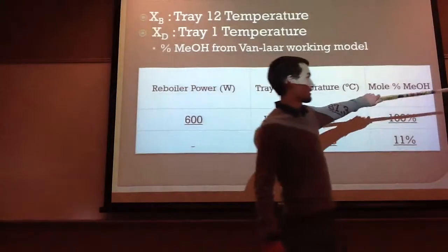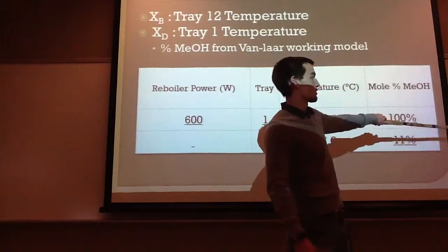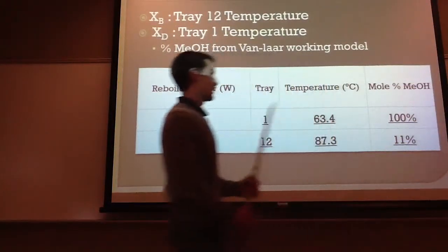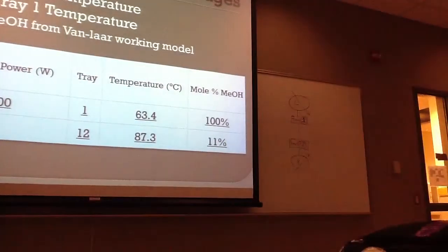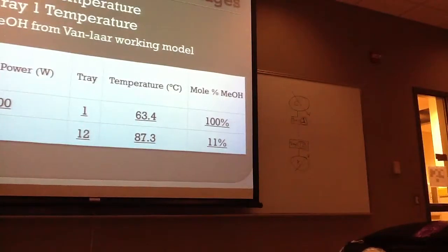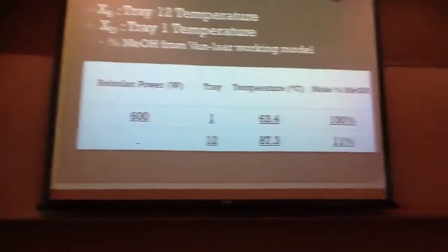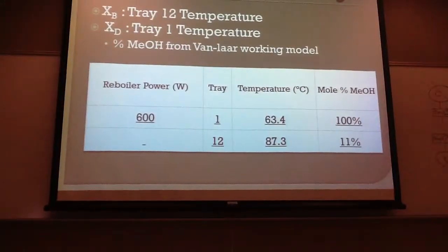Tray 1 is the topmost tray just below the condenser, and tray 12 is the bottommost tray of the column. Tray 1 temperature was 63.4°C, indicating that it contained 100 mole percent methanol. At the end of our experiment we went down to 600 watts, and tray 12 was 87.3°C, which indicated it had 11 mole percent methanol.